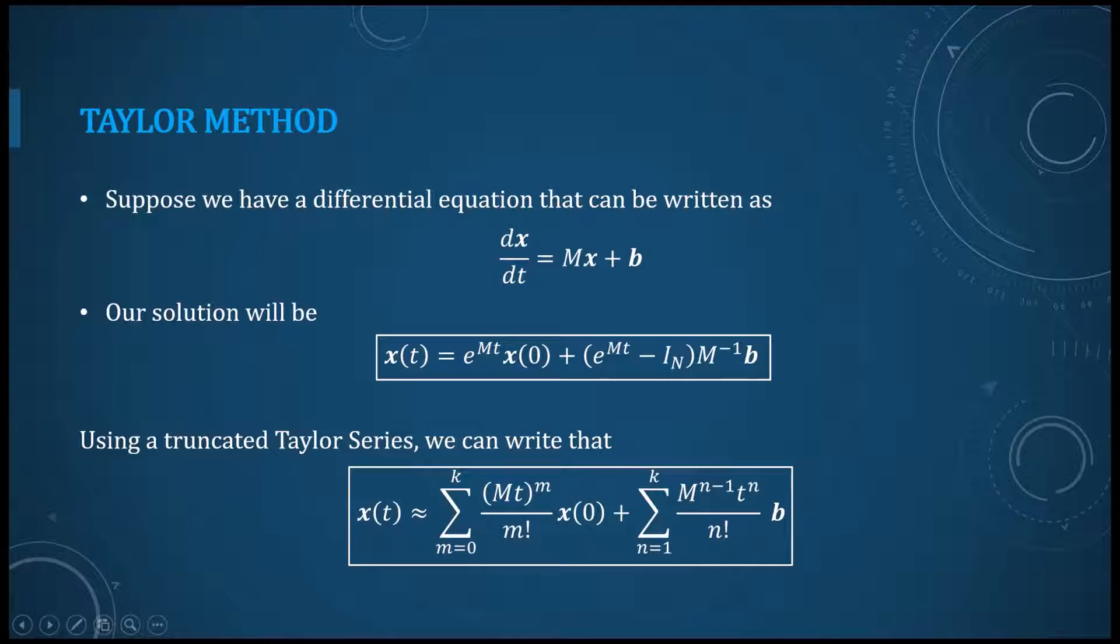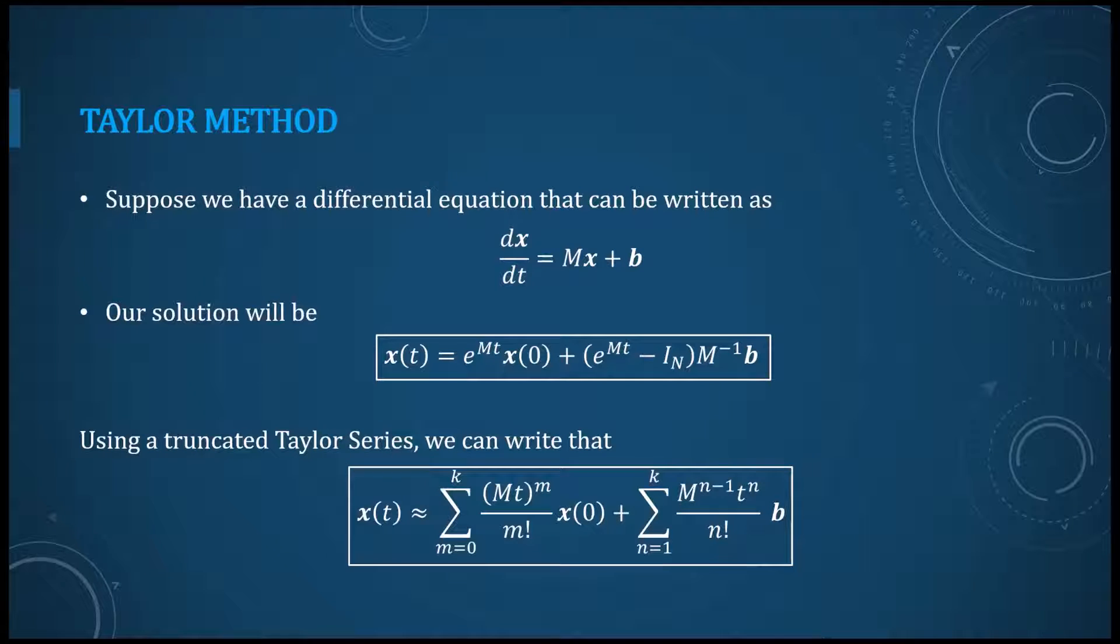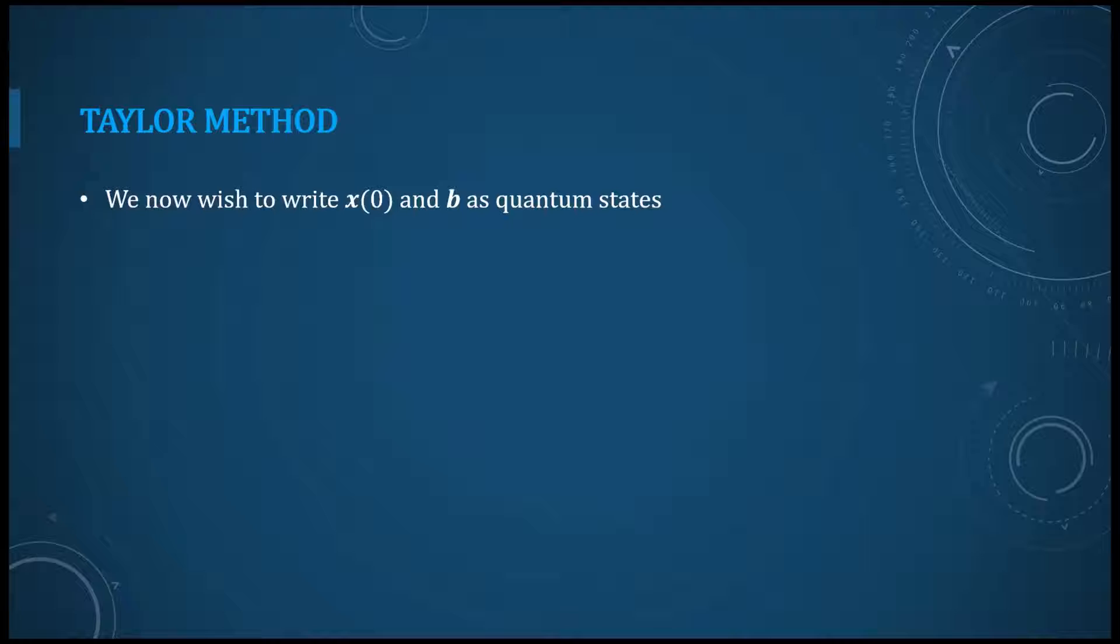As you can see here, the value of x of t depends on the value of b and also on the value of x zero. Now we want to write those b and also x zero as states.